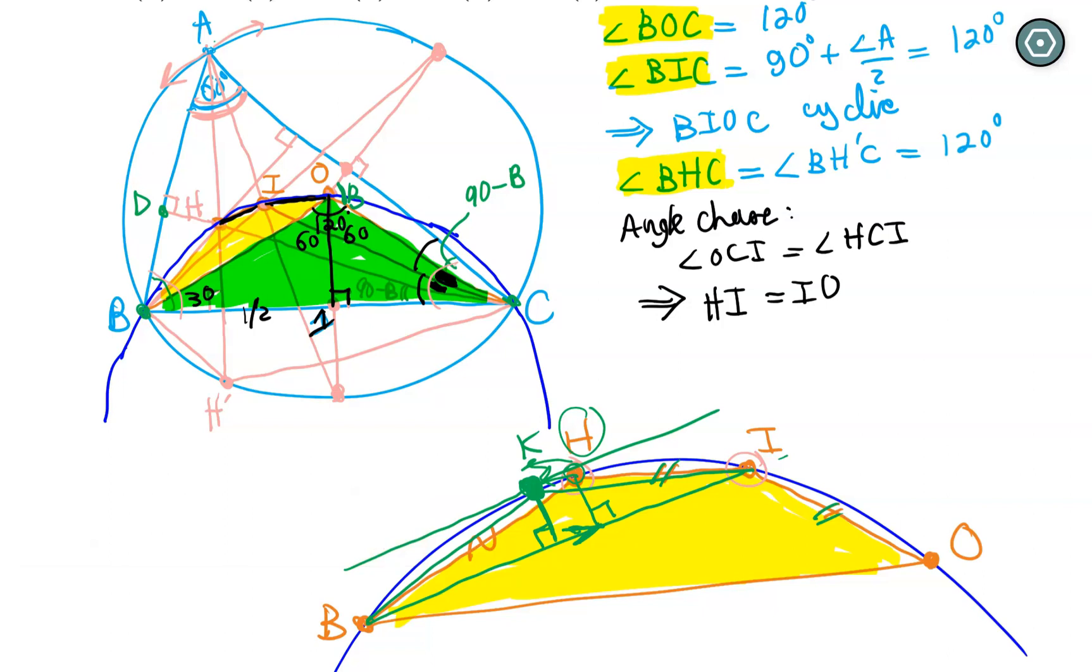So therefore, I and H must be such that they will trisect BO. But then, that's interesting. So we have three angles, one, two, three angles, which will measure the same right now. Optimization implies that BH must also be equal to HI. BH must also be equal to HI, which is already equal to IO as well. So we have this trisection.